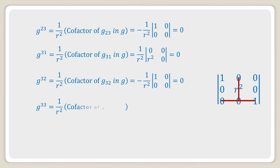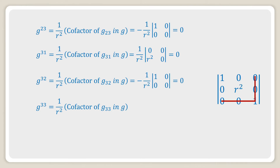Next, g^33 is equal to one over r² into the cofactor of g_33 in g, which is equal to one over r² into the determinant of 1, 0; 0, r², and this is equal to 1.